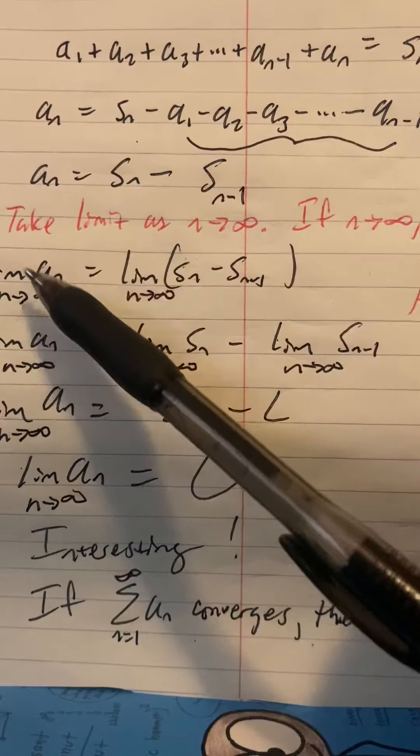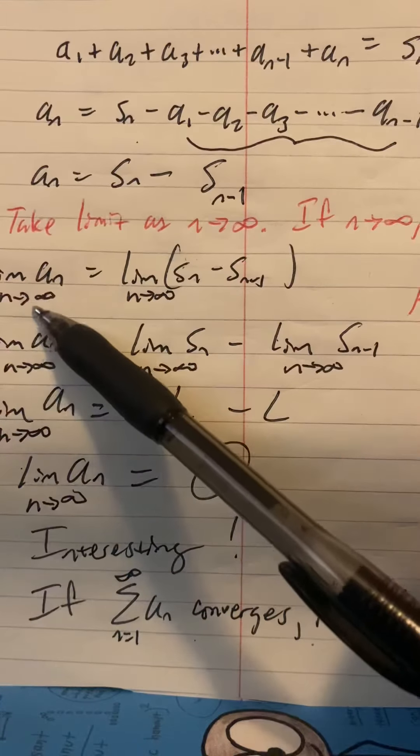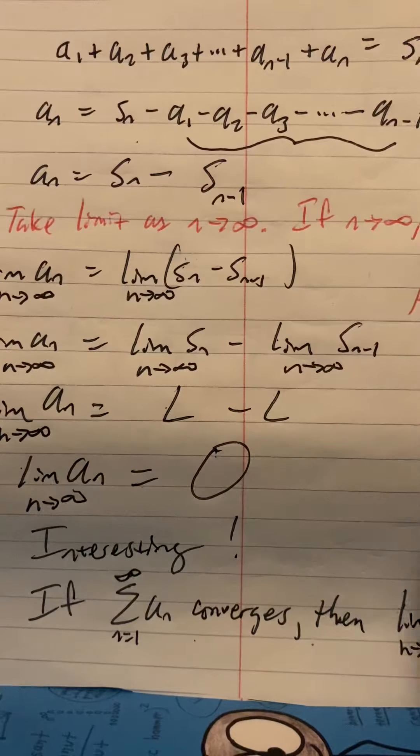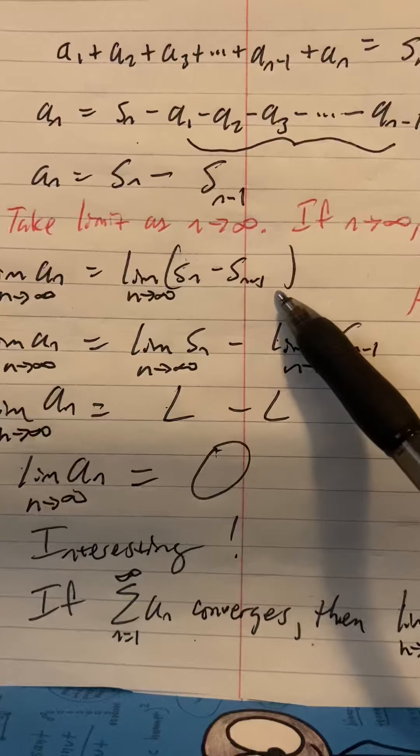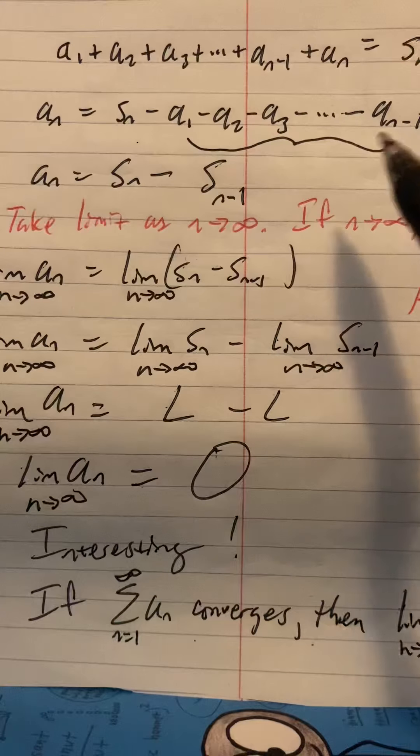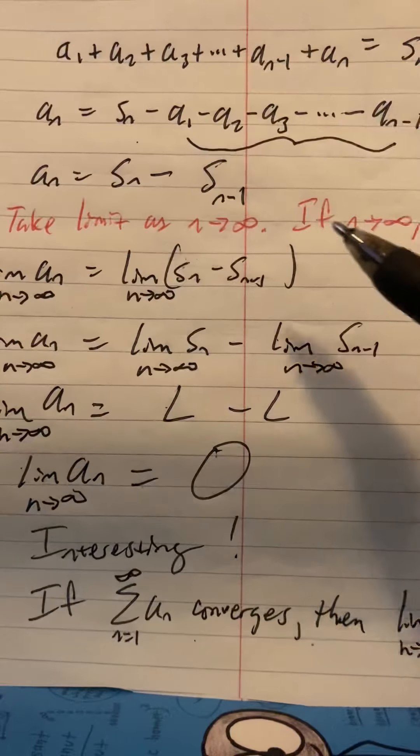Now when we take the limit, we're going to take the limit of both sides. When we take the limit as n goes to infinity, we notice that if n is going to infinity, so is n minus 1. n minus 1 will also be going to infinity because if n is infinity minus 1, you're still infinity.